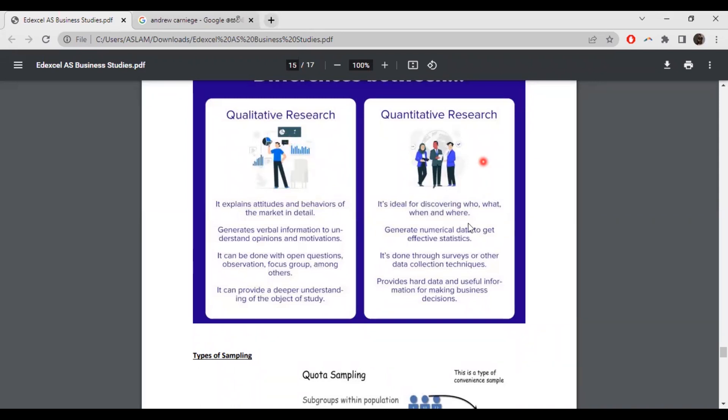Then we have quantitative research. It's ideal for discovering who, what, when and where. Generate numerical data to get effective statistics. This is done through surveys or other data collection techniques. Provided hard data and useful information for making business decisions. The details are taken for necessary understanding. Quantitative research speaks in numerical terms. In numerical value, money values are considered here. It's done through surveys or other data collection techniques. So whatever the data is which is available, they can decide with the numerical forms, and it's very easy for us to access this type of quantitative research.